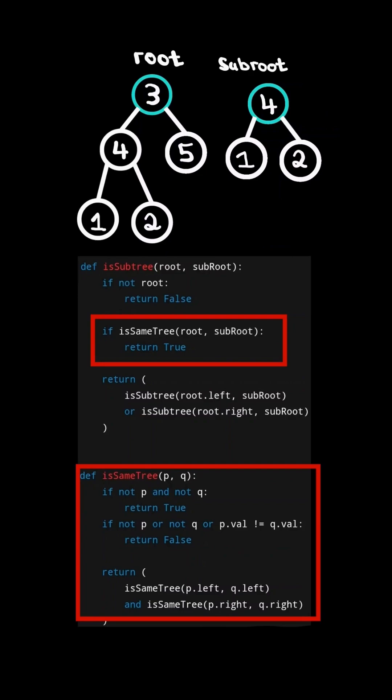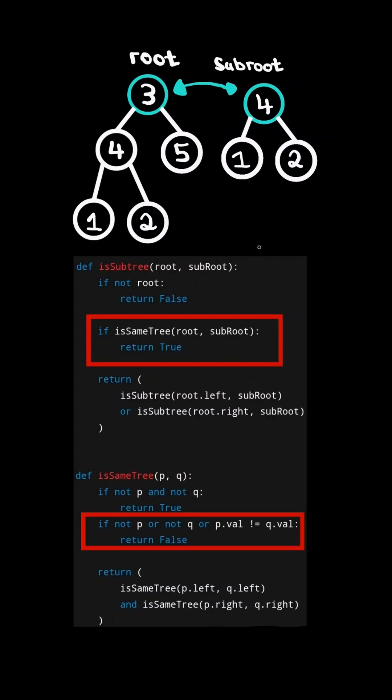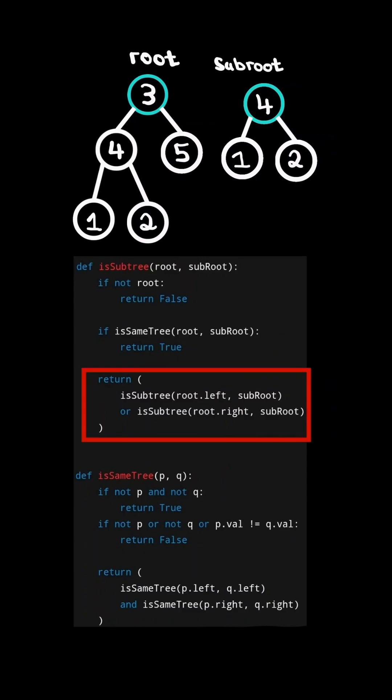In the function isSameTree, we check if the structure at the root node matches subroot. We check if the values at P and Q are equal — in this case they're not, so we return false. We return back to the isSubtree function and continue the algorithm by checking if the root's left subtree equals subroot, or the root's right subtree equals subroot.